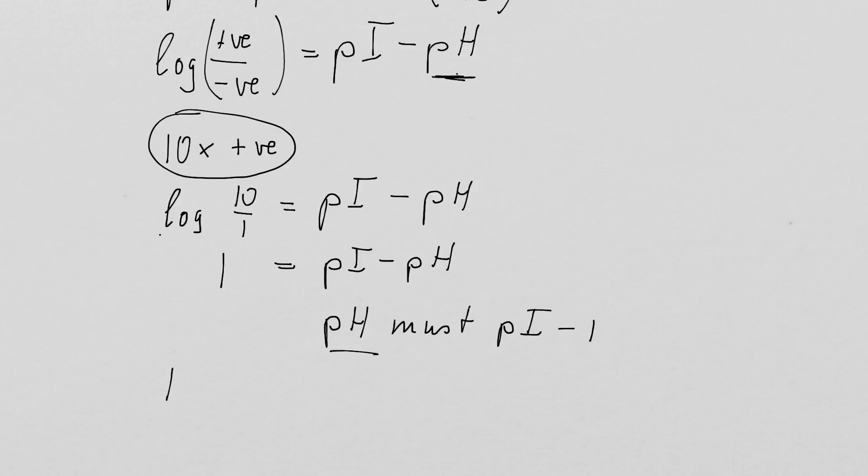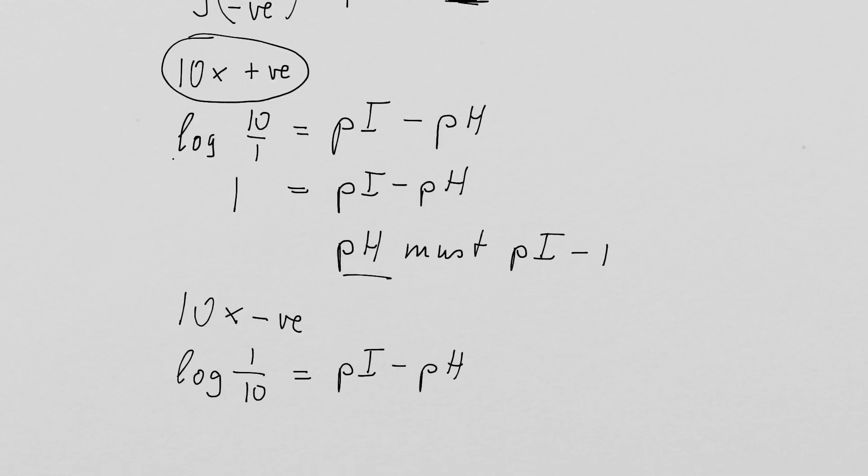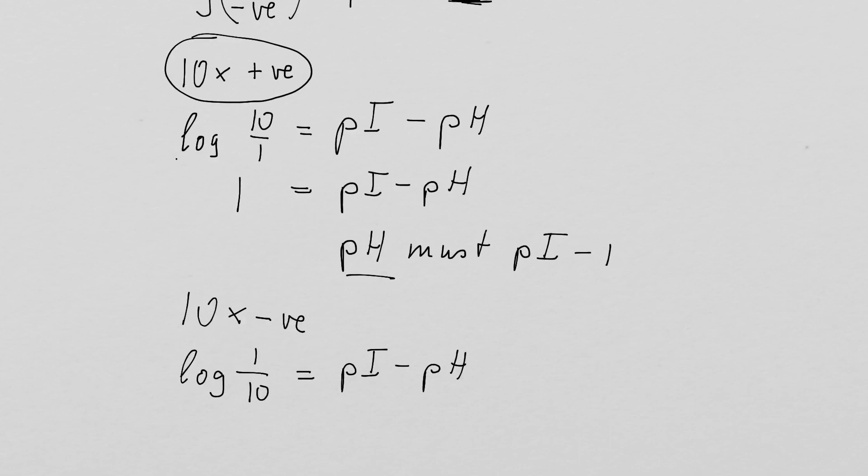We can also have ten times negative charges. And in this case we would have log 1 over 10 equals pI minus pH. So log 1 over 10 is minus 1 equals pI minus pH. And in this case the pH must be pI plus 1.